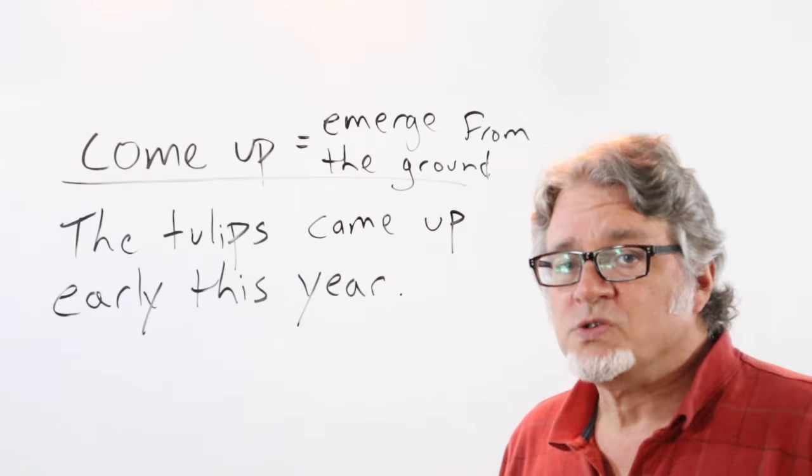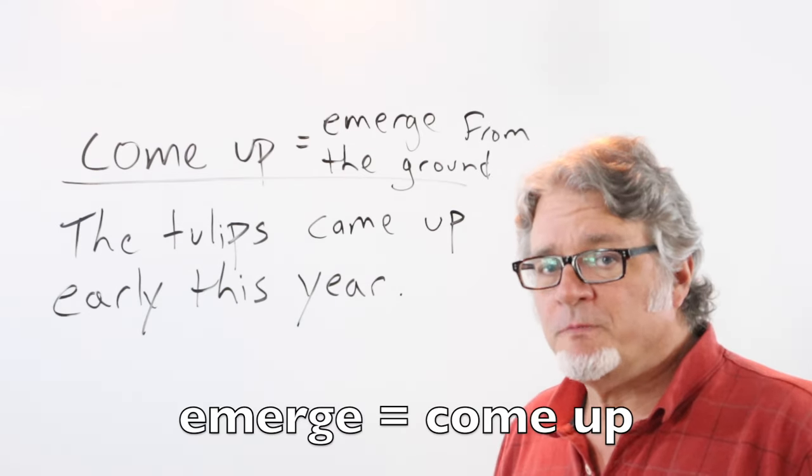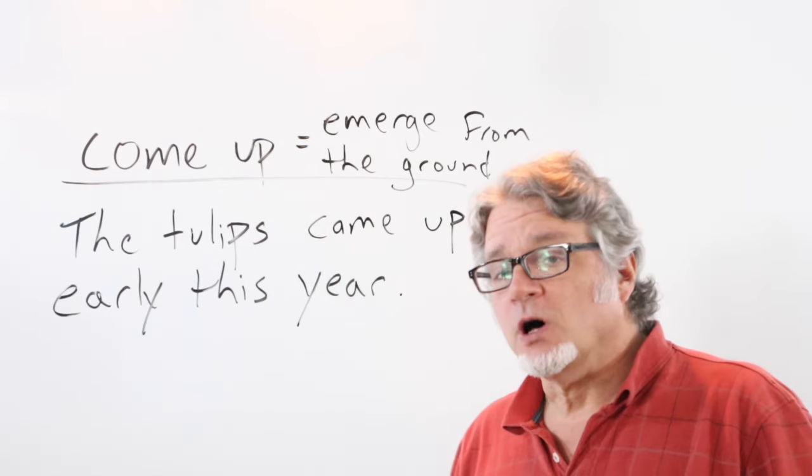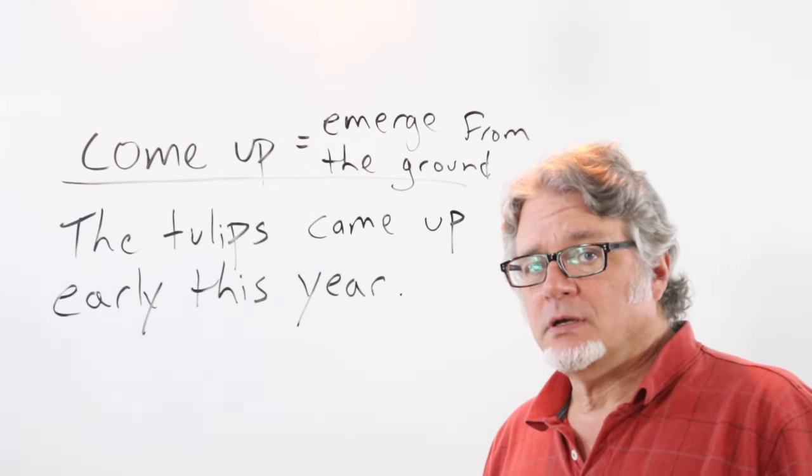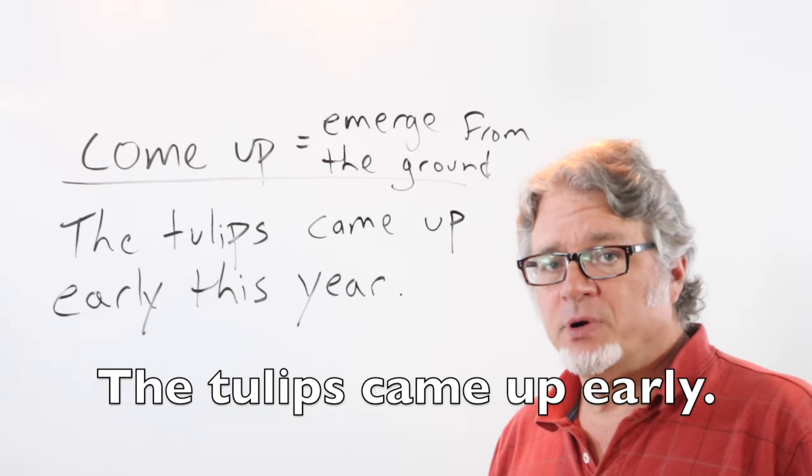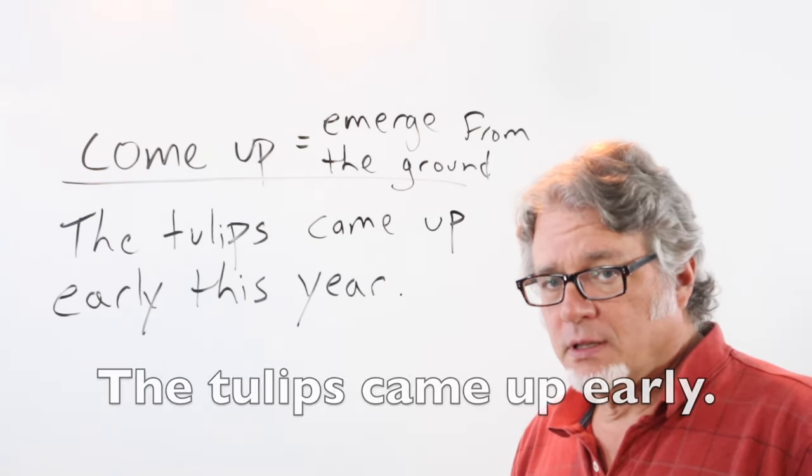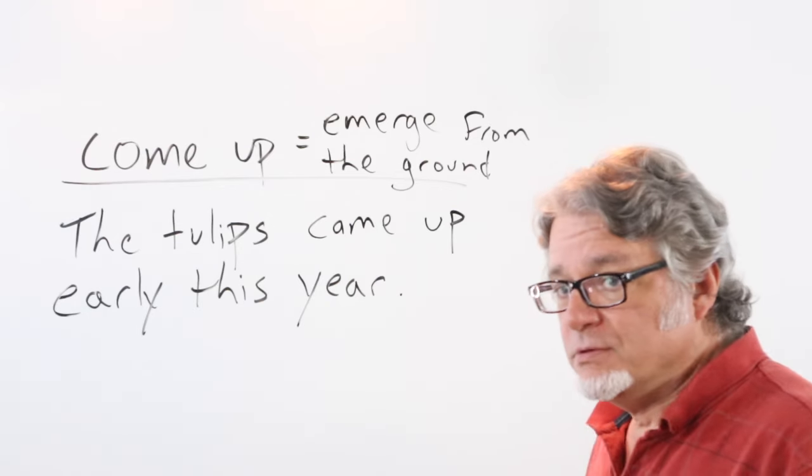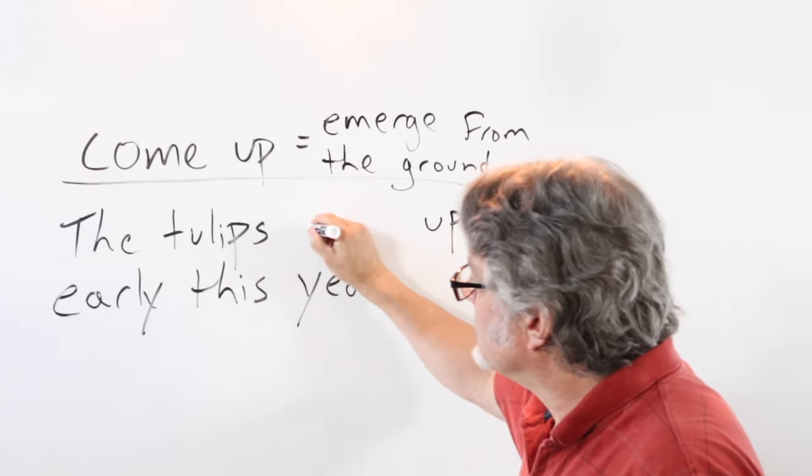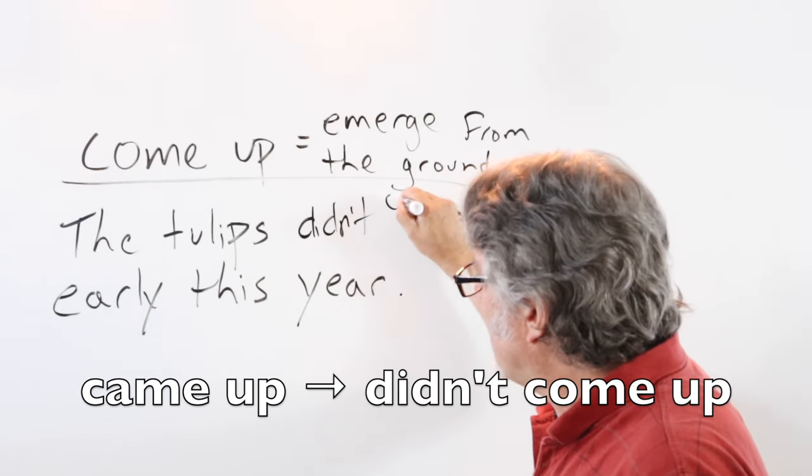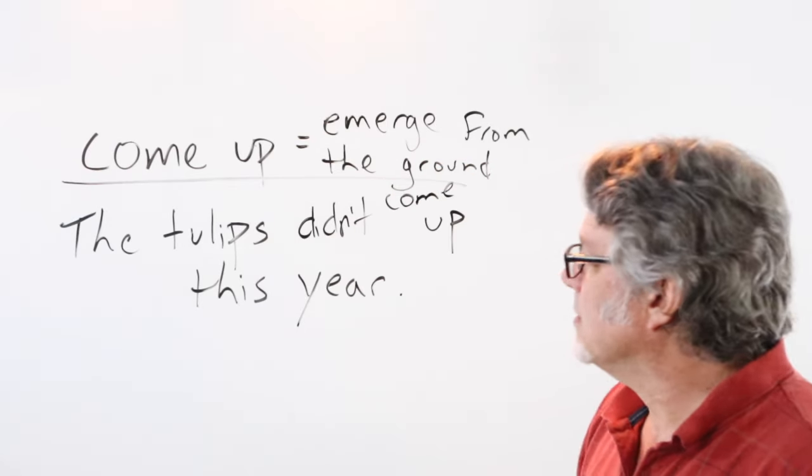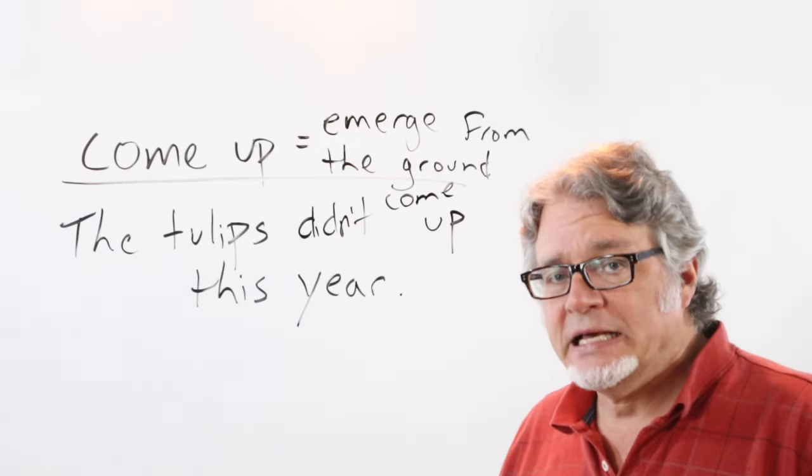Come up is used for plants that emerge from the ground. This happens in the spring. The tulips came up early this year. We had a warm spring and the tulips came up early. This is in the past tense. To make this negative, just change came to didn't come up. This year the tulips didn't come up this year.